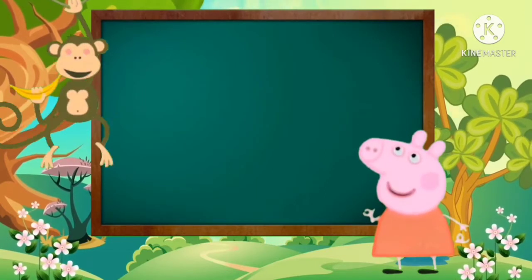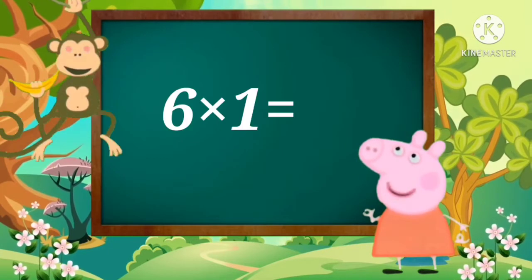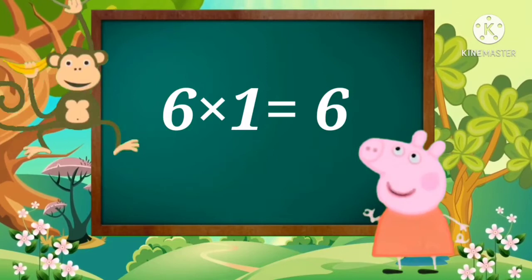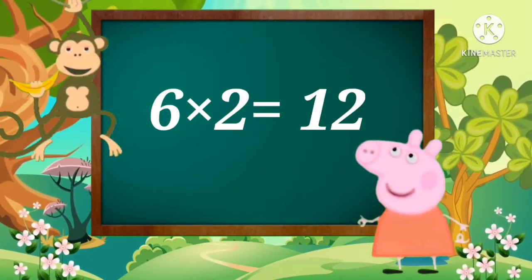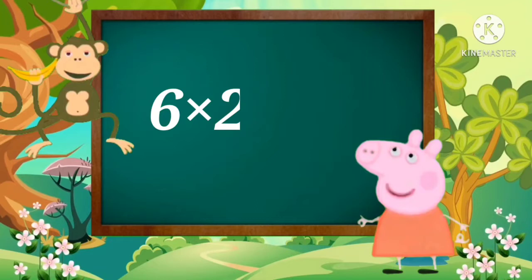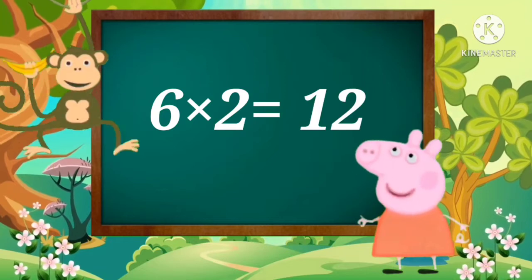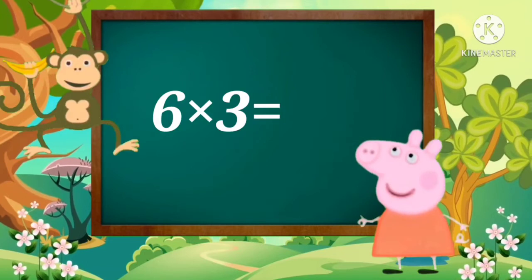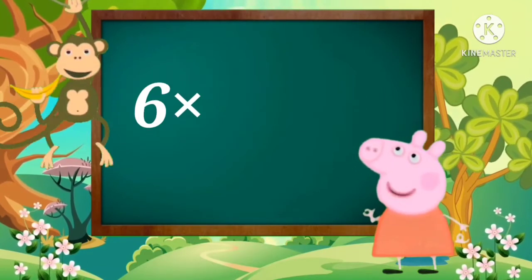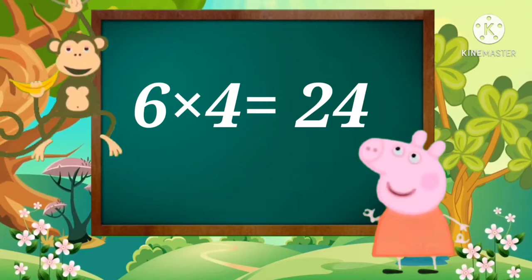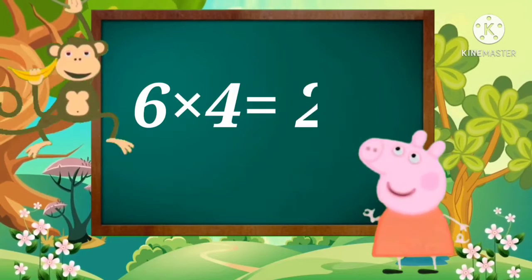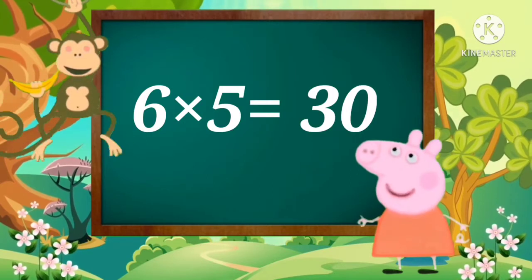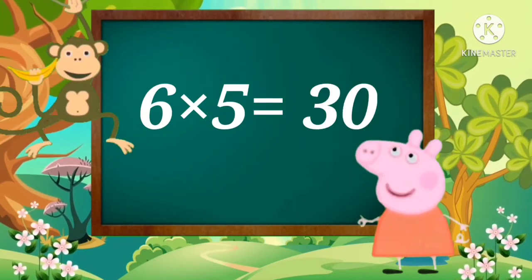Now let's repeat the table again, children. Six ones are six. Six twos are twelve. Six threes are eighteen. Six fours are twenty-four. Six fives are thirty.